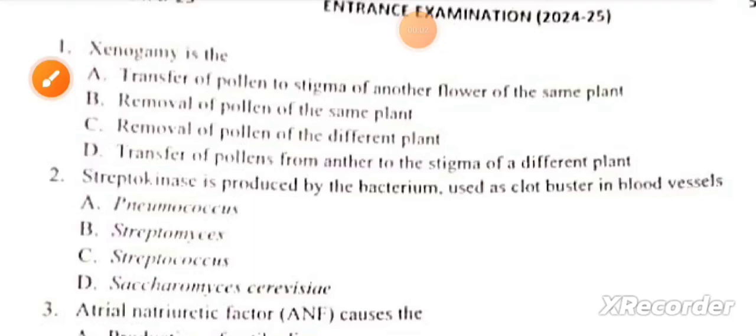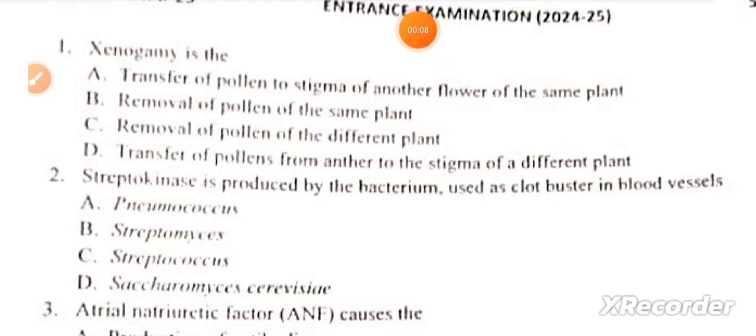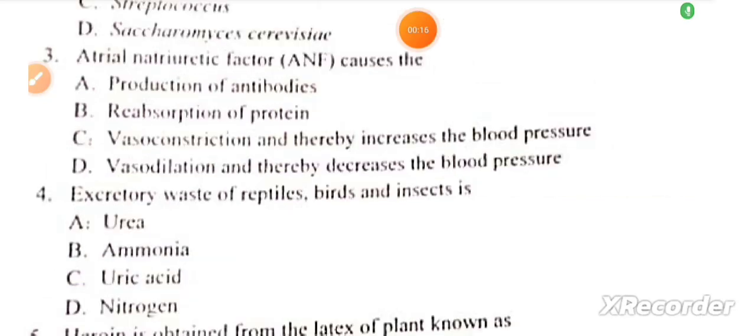First question: Allogamy is the transfer of pollen from anther to the stigma of a different plant. Streptokinase is produced by the bacterium Streptococcus and used as a clot buster in blood vessels.